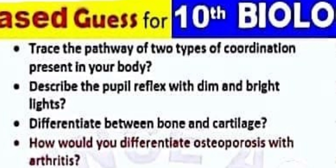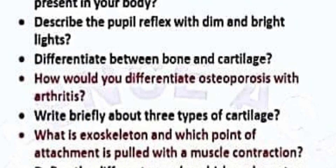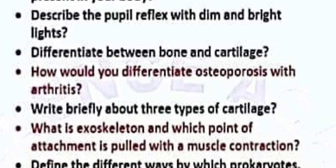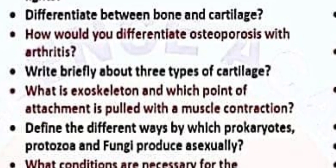Differentiate between bone and cartilage. How would you differentiate osteoporosis from arthritis? Write briefly about the three types of cartilage. What is an exoskeleton and which point of attachment is pulled during muscle contraction?